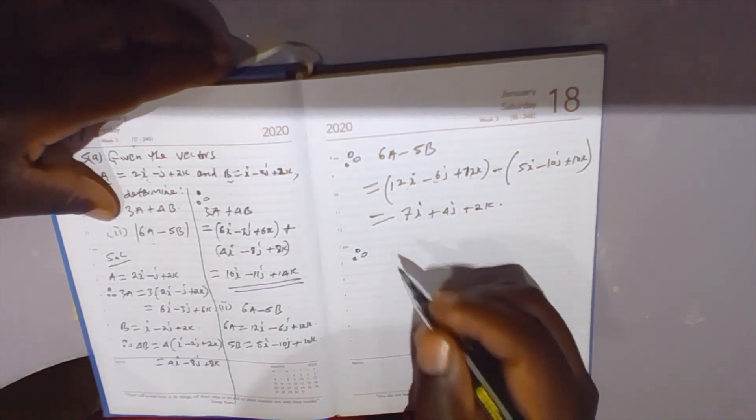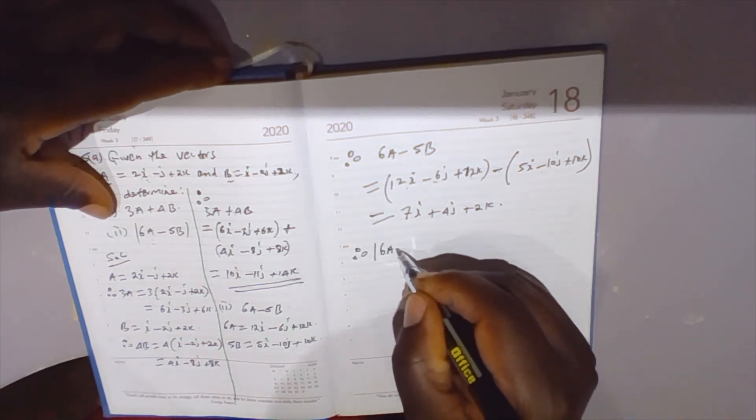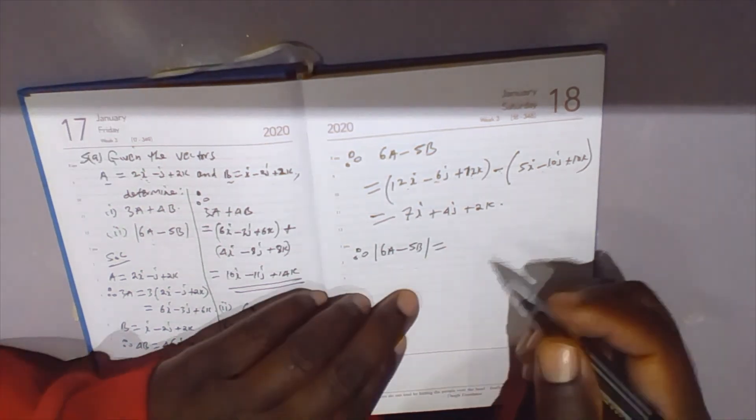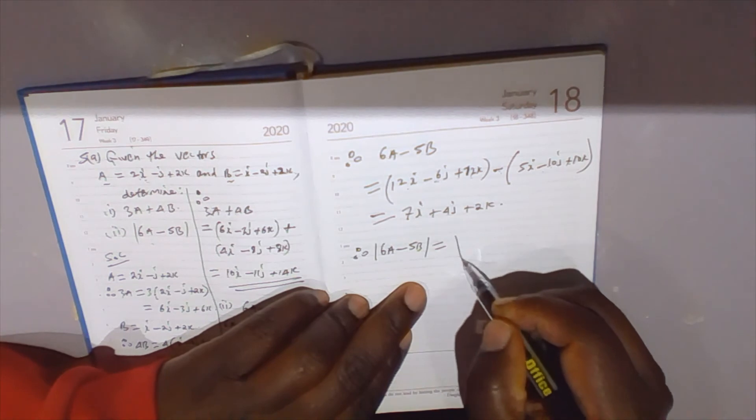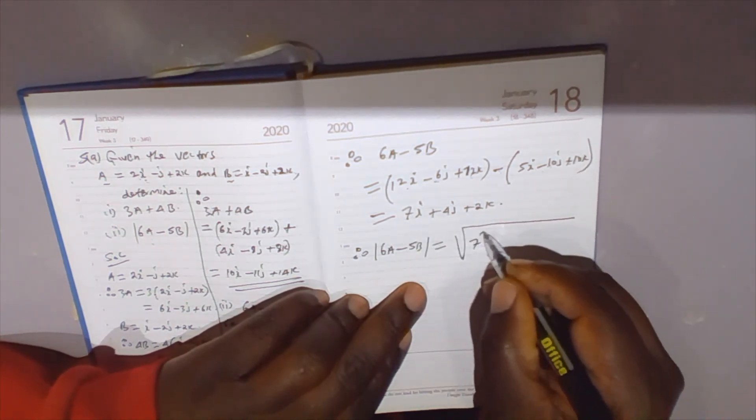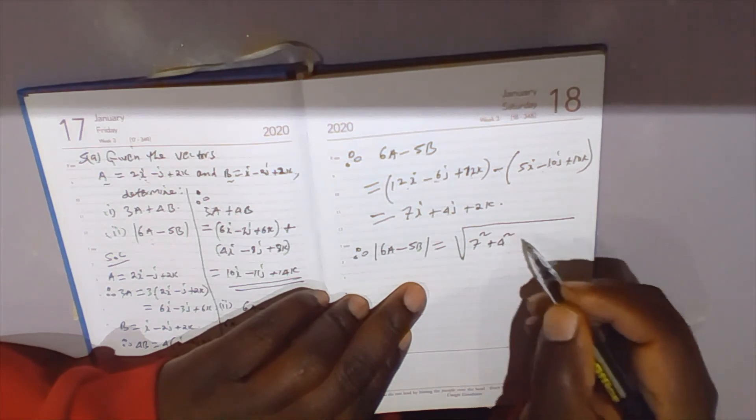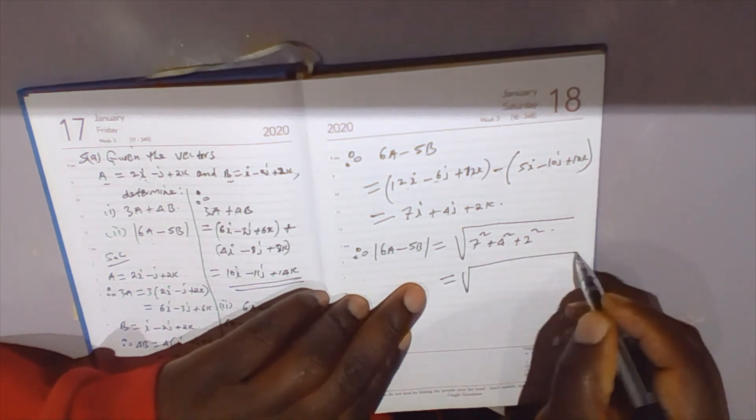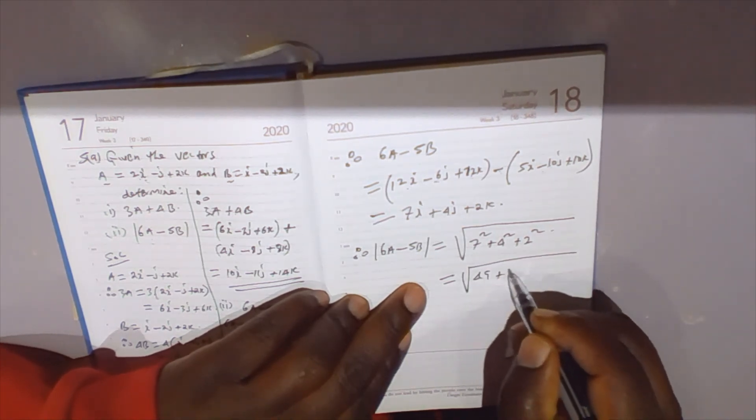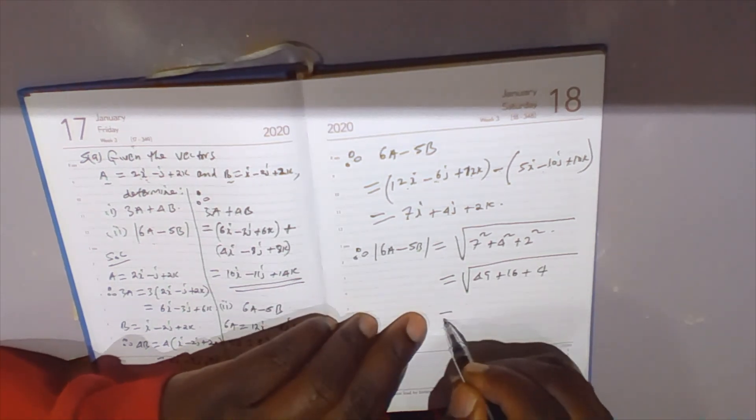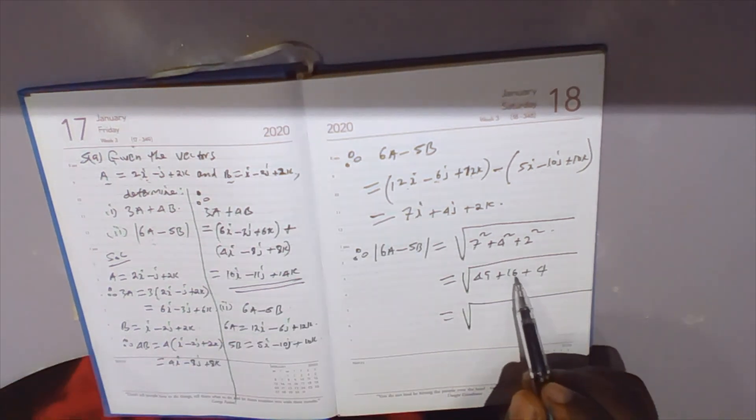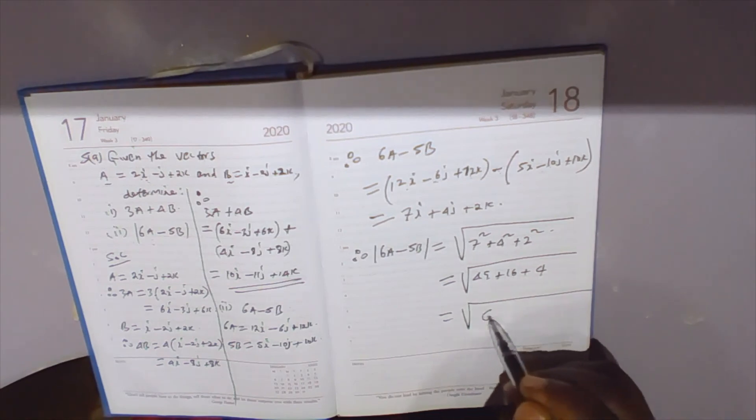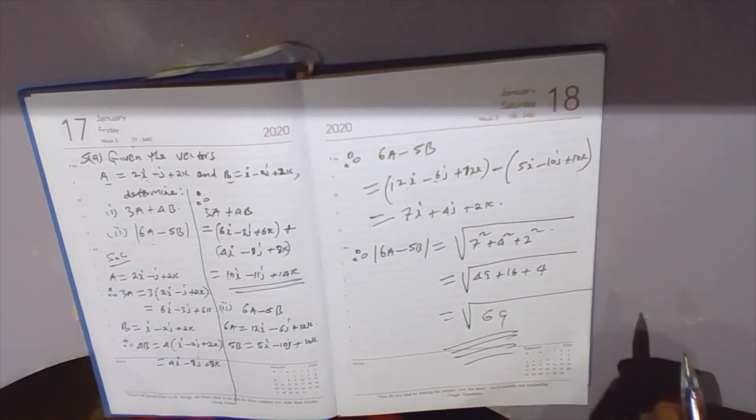The modulus of 6a minus 5b equals the square root of 7 squared plus 4 squared plus 2 squared, which equals the square root of 49 plus 16 plus 4, equals the square root of 69.